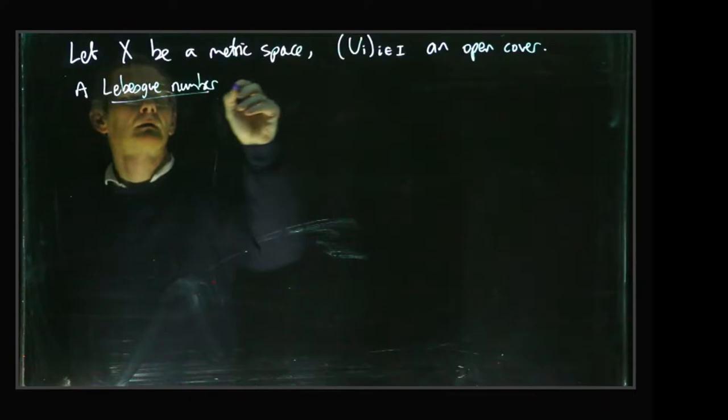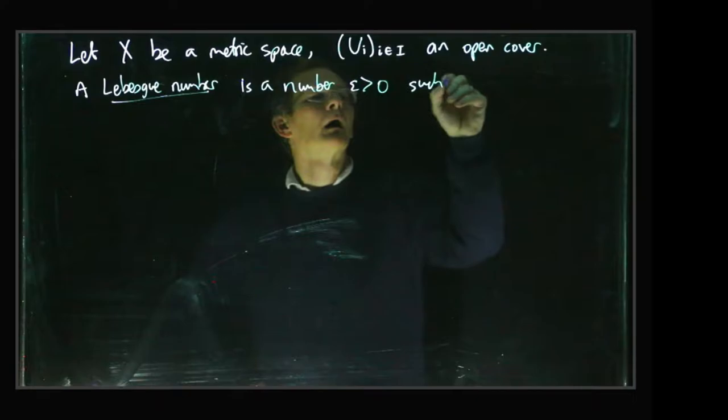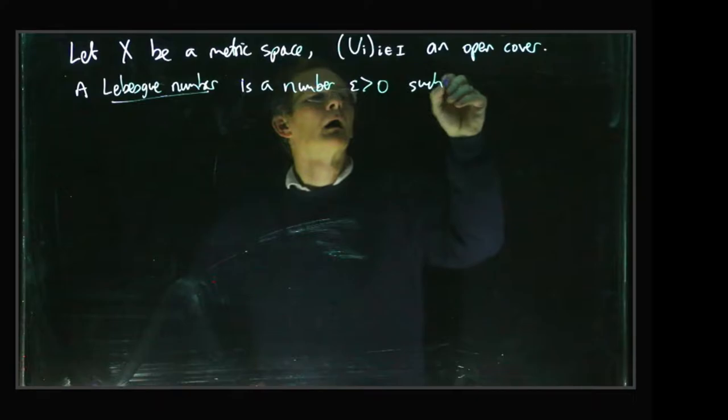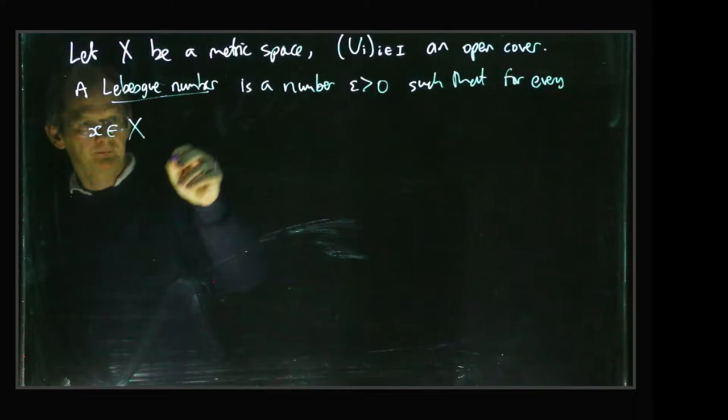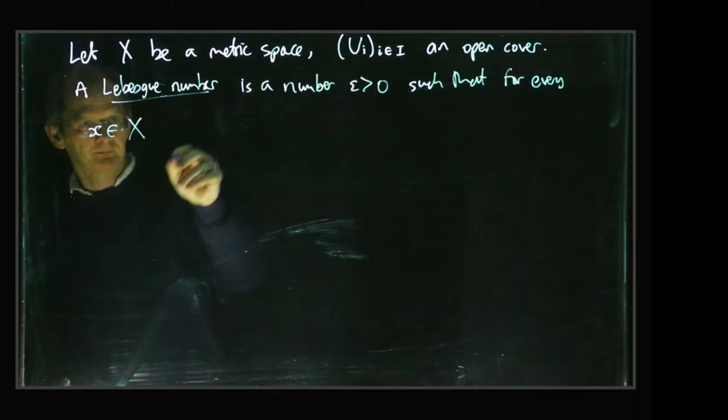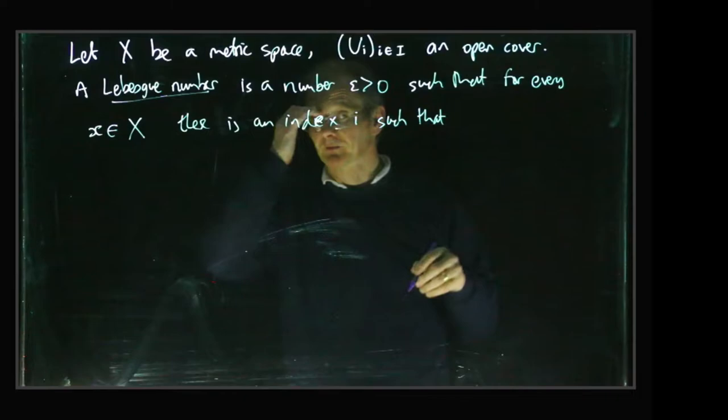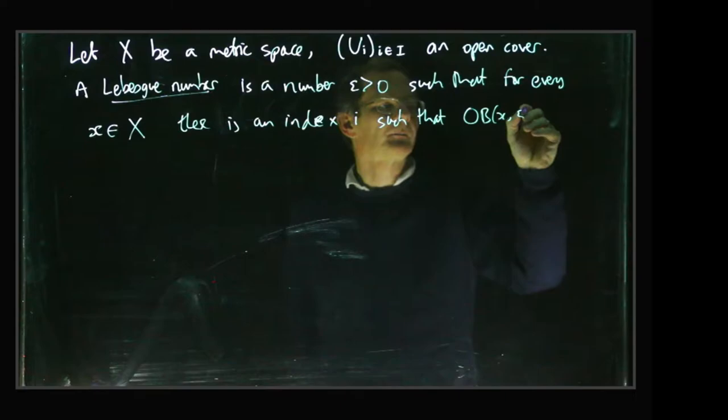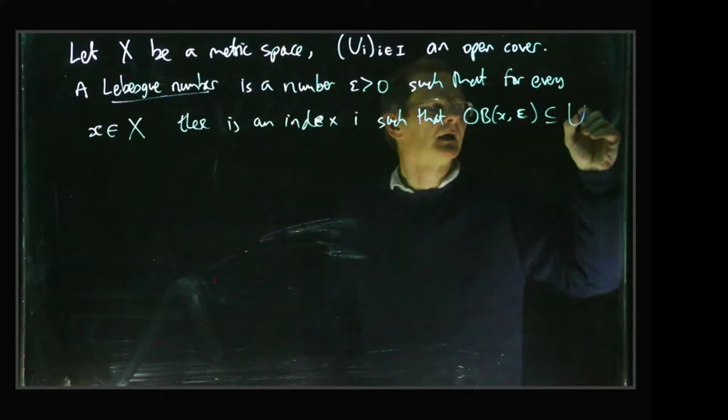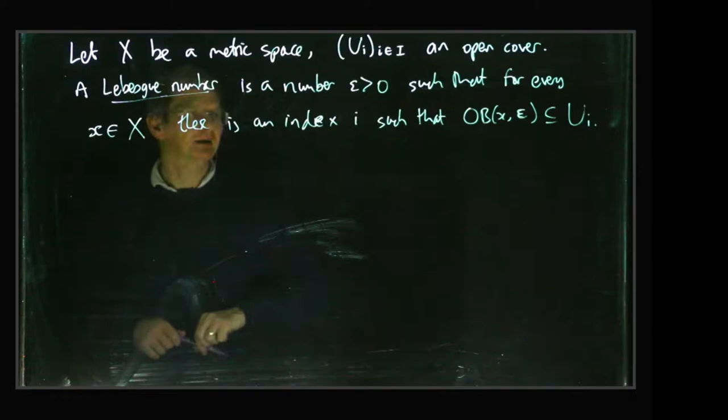So this is a number epsilon, say greater than 0, such that for every point x of our space there's an index i such that not just the point x itself, but the whole open ball around x of radius epsilon is contained within the corresponding set Ui. Okay, so that's what we mean by a Lebesgue number.